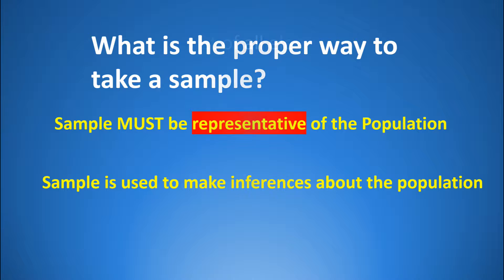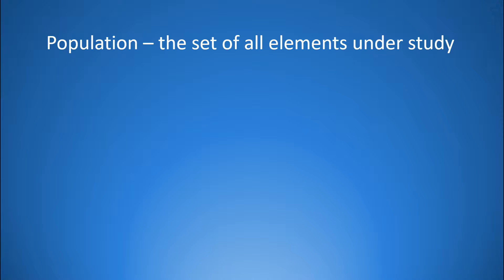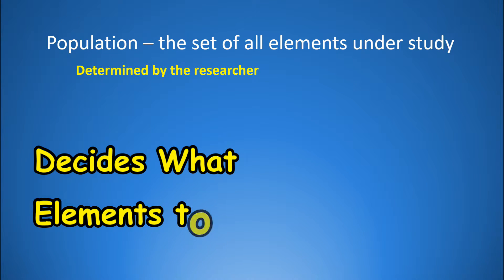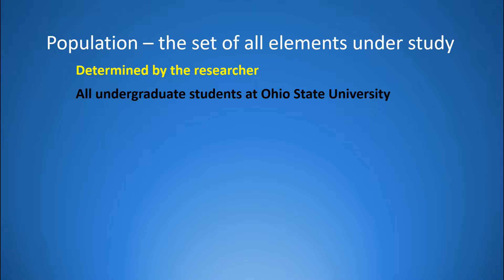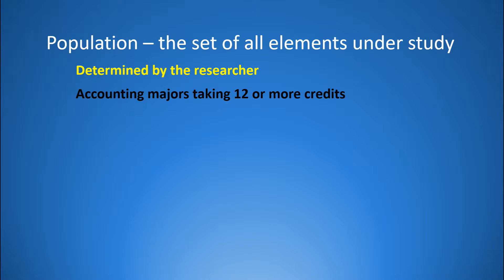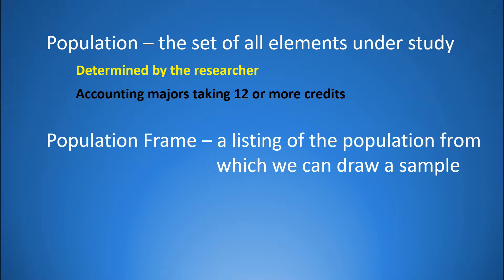Let's start this discussion of sampling by distinguishing between a population and a sample. A population is the set of all elements under study, and it's up to the researcher to decide who the population is. For example, I can study all students at Ohio State University, or narrow it down to all students taking 12 credits or more at the undergraduate level, or further to all undergraduate accounting majors taking 12 credits or more.